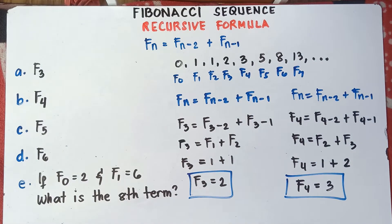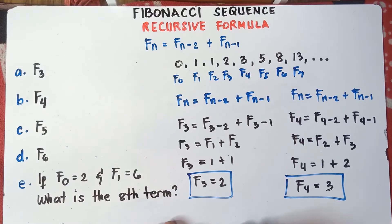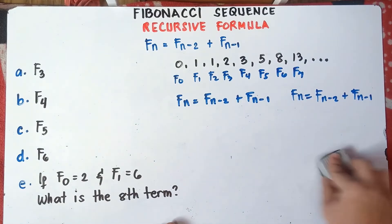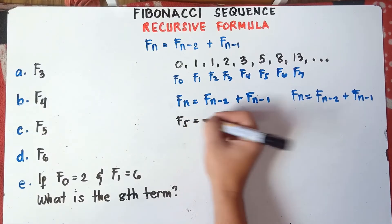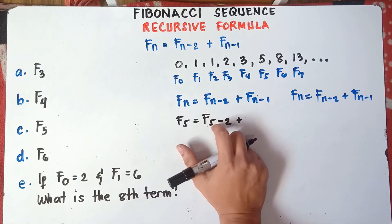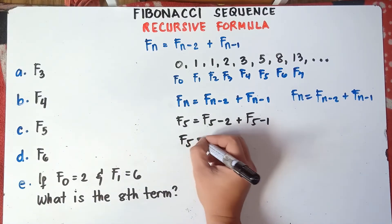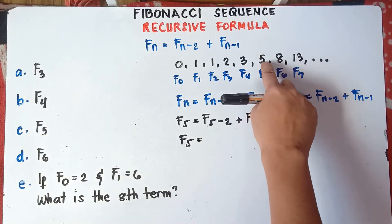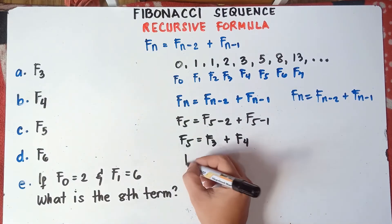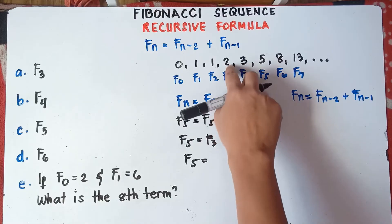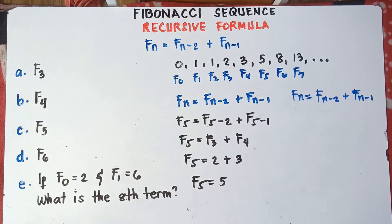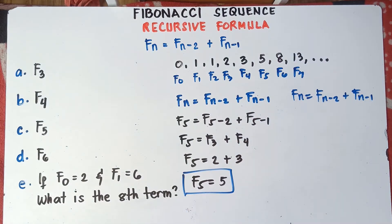Easy, right, for the recursive formula? Let's try to find F sub 5. F sub 5 equals F sub 5 minus 2 plus F sub 5 minus 1 — that is F sub 3 plus F sub 4. Based on the pattern, F sub 3 is 2 and F sub 4 is 3. So F sub 5 equals 2 plus 3, which is 5. That's how you answer the recursive formula.